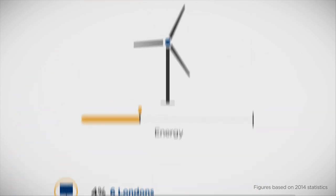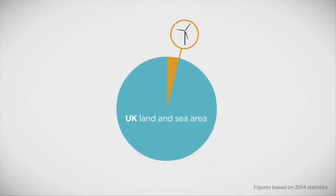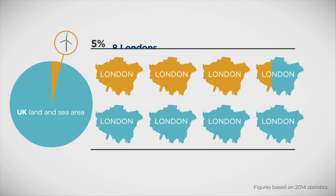Wind turbines harness energy from wind. Covering around 5% of the UK's land and sea with wind turbines would generate all the energy we need. But that's the same as about eight Londons.